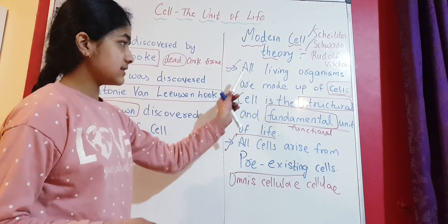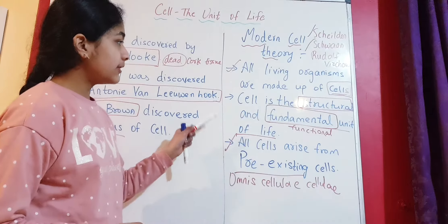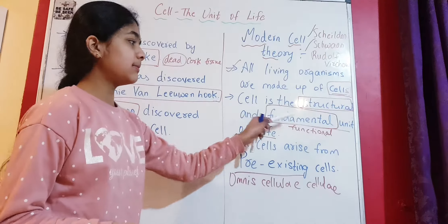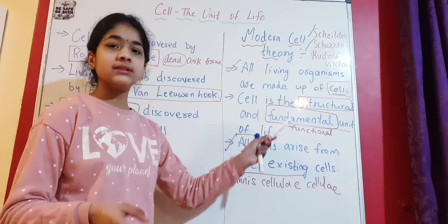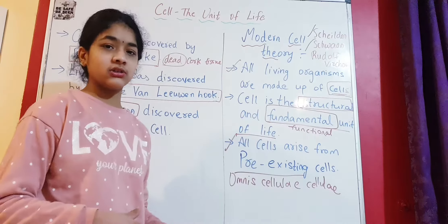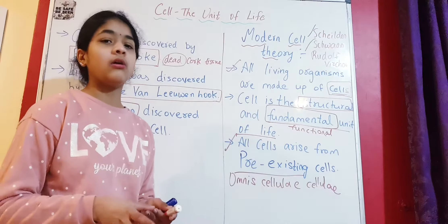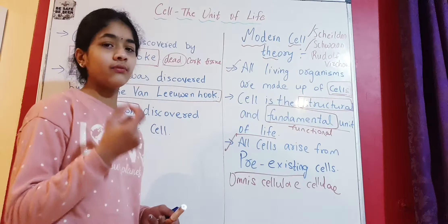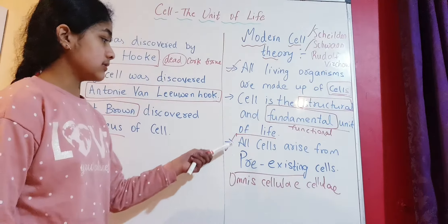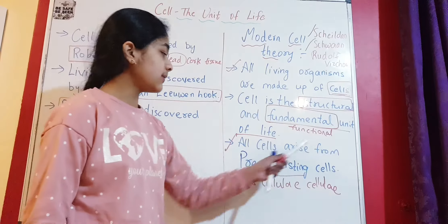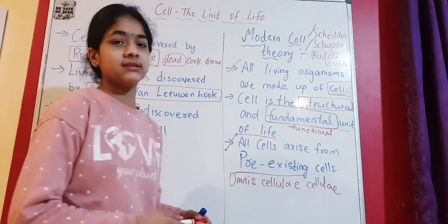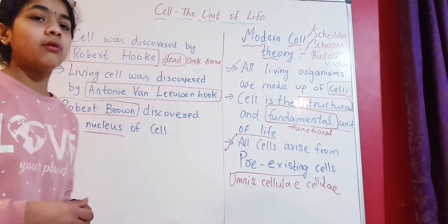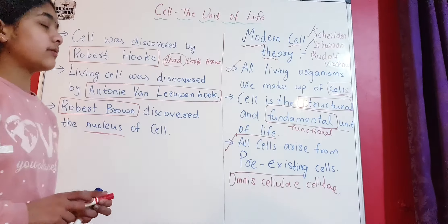So this is the modern cell theory. The first point is all living organisms are made up of cells. The next point is cell is the structural and fundamental unit of life — fundamental means functional, structural means how an organism is made up of tissues which are made up of cells. The third point is all cells arise from pre-existing cells — 'Omnis cellula e cellula' in Latin.